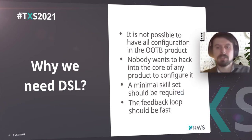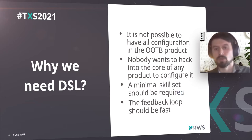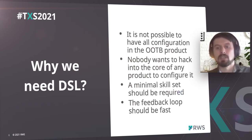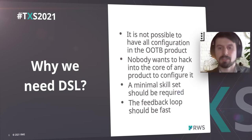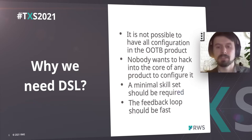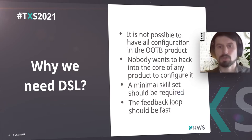The third reason is that minimal skill sets should be required, so it's easier to find the right people and the learning path will be much easier and faster. And last but not least, the feedback loop should be fast enough — people who do configuration should be able to see exceptions as soon as possible. You don't want to wait ages until the application is built and deployed before you can see something.